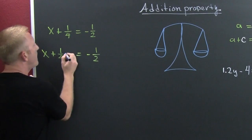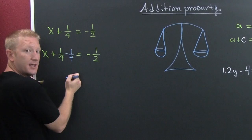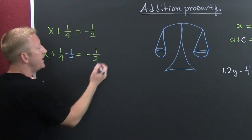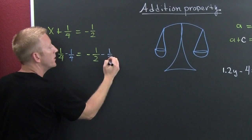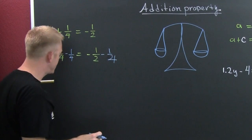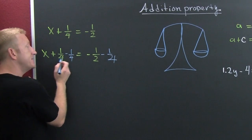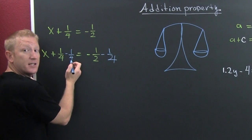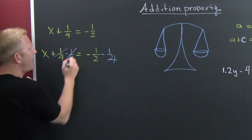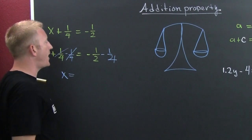What you do to one side you must also do to the other — that's the first of your golden rules. I took one-fourth off this side, so I must also take one-fourth off that side. That's the additive inverse — the number that when added to the number the sum is zero — and you're left with x on the left.